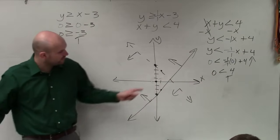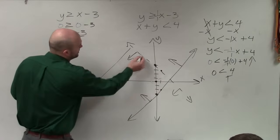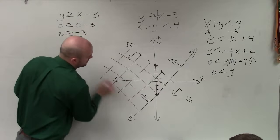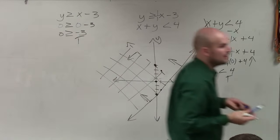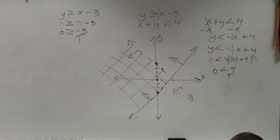And then you guys can see that the only region where both of my inequalities are true is right here. OK? And that's it. So when you're doing a system of inequalities, all you guys are basically doing is just graphing two of them on the same.